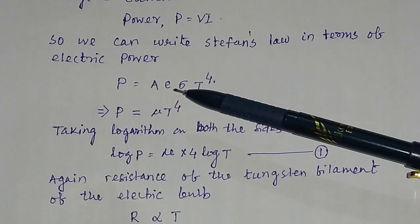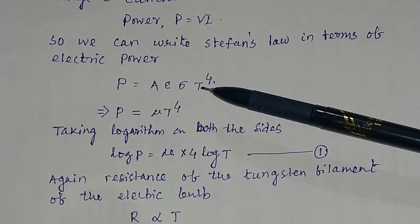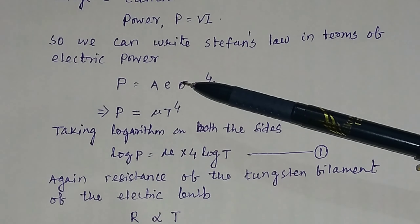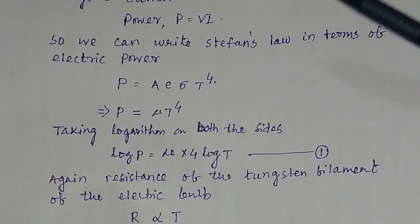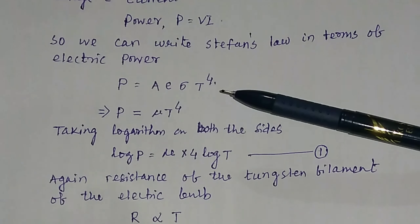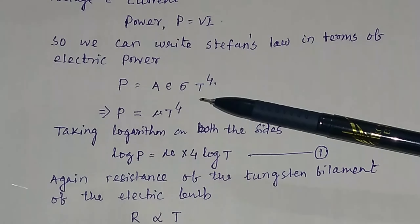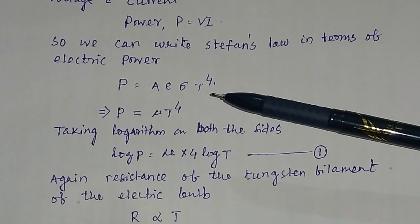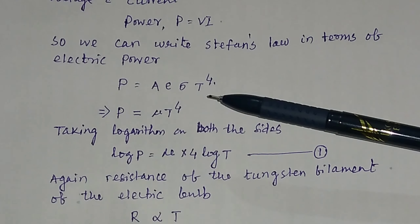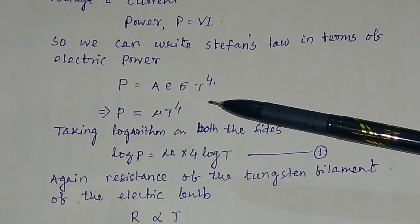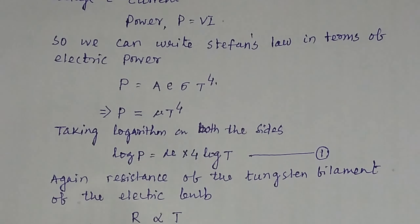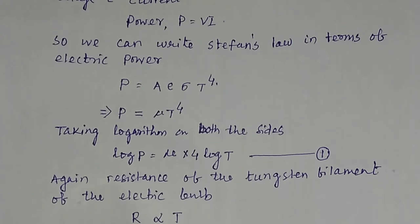Again, the resistance of the tungsten filament inside the electric bulb is proportional to the temperature — if you increase the temperature, the resistance also increases. So, resistance R = μ·T. Taking logarithm on both sides, you get: log R = μ × log T. So, if you compare equations 1 and 2 by simple division, log P divided by log R will be equal to 4.